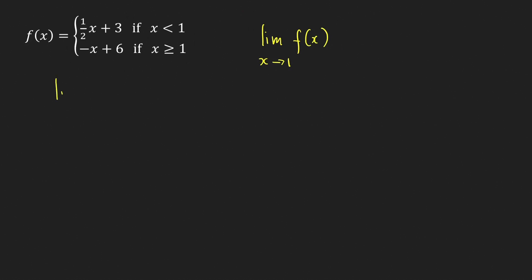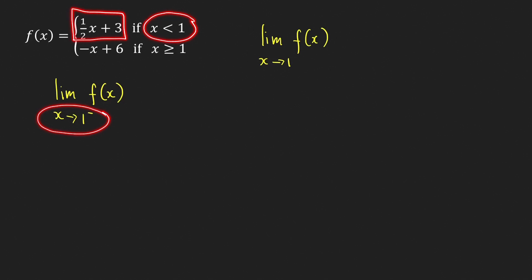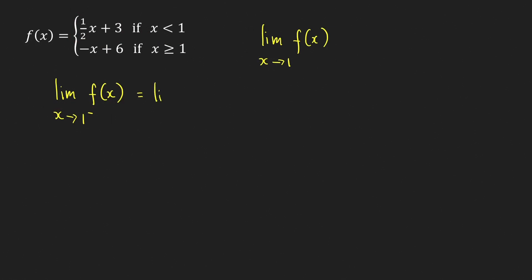Let's compute the left-hand limit — the limit of f of x as x approaches 1 from the left. When we approach 1 from the left, the x values are less than 1, so we need to use the formula defined for such x values, which is (1/2)x + 3. So this is equal to the limit as x approaches 1 from the left of (1/2)x + 3.